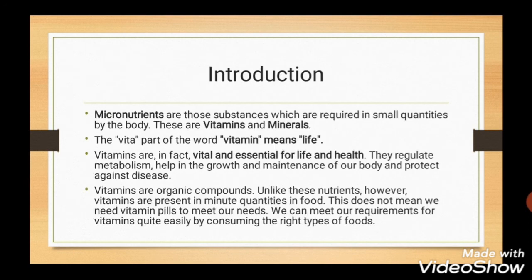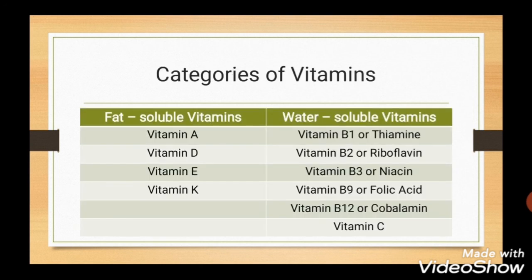Micronutrients are those substances which are required in small quantities by the body. There are two micronutrients: Vitamins and Minerals. The 'vita' part of the word vitamin means life. Vitamins are vital and essential for life and health. Major functions of vitamins are regulation of metabolism, helping in the growth and maintenance of our body, and protecting against diseases. Vitamins are divided into two categories: Fat Soluble Vitamins and Water Soluble Vitamins.